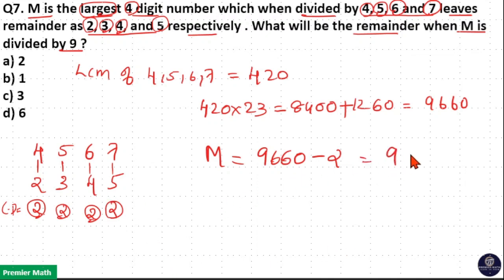Which is equal to 9,658. So M is 9,658. Now if you divide it by 9, when you divide M by 9 we need to find the remainder.